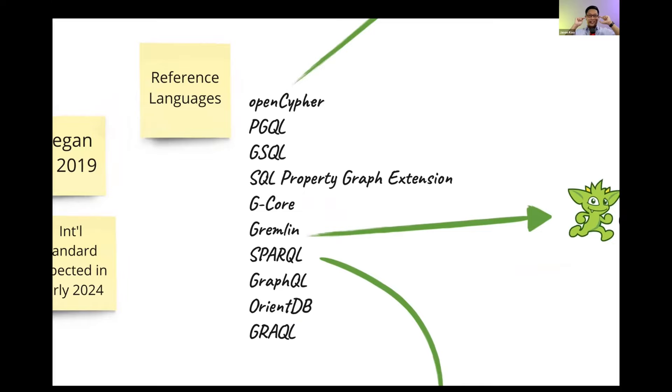Now graph query language should not be confused with graph QL, which is a better rest alternative. It's an API interface developed by a few folks at Facebook. I think they officially sponsored its development. Fantastic protocol. If you haven't used it before, I definitely recommend you take a look at it. It will save you a lot of headache, but it is not the same as the graph query language that is under development.